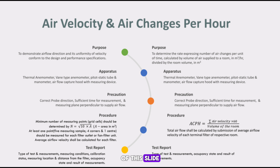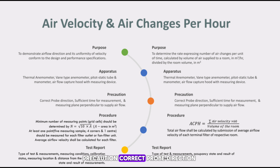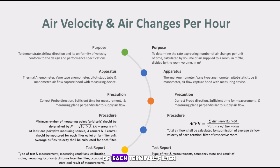Air Changes Per Hour (ACPH) — Purpose: to determine the rate expressing number of air changes per unit of time, calculated by volume of air supplied to a room in cubic meters per hour divided by the room volume in cubic meters. Apparatus: thermal anemometer, vane-type anemometer, pitot-static tube and manometer, and airflow capture hood with measuring device. Precaution: correct probe direction, sufficient time for measurement, and measuring plane perpendicular to supply airflow. Procedure: the given formula is used for measurement; total airflow is calculated by summation of average airflow velocity of each terminal filter of the respective room. Test report includes: type of test, measurements, occupancy state, and result of measurements.